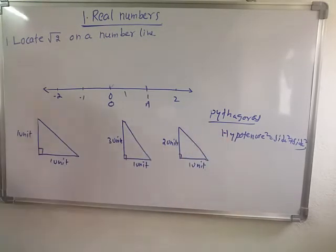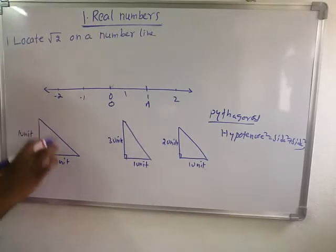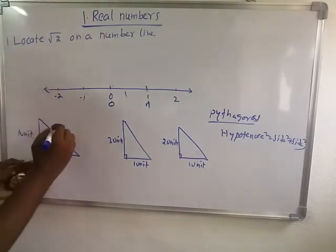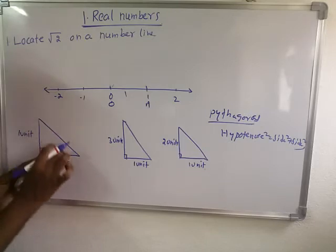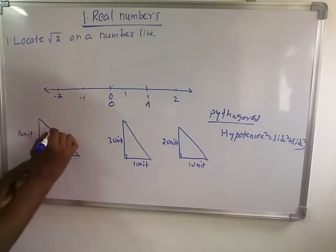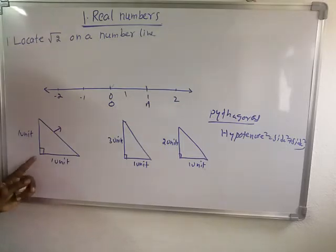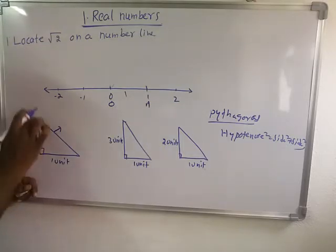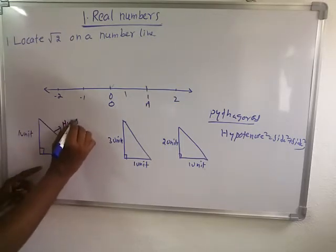Now we apply this theorem in a triangle. What is the hypotenuse? Hypotenuse means the side which is opposite to the right angle. That side we call the hypotenuse.